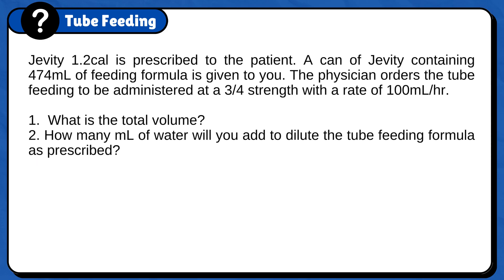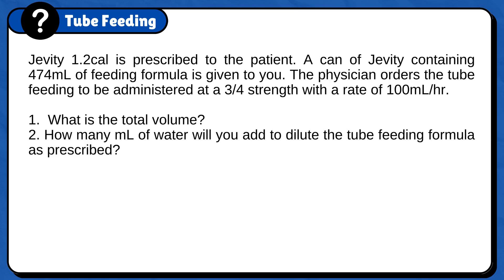Javity 1.2 cal is prescribed to the patient. A can of Javity containing 474 ml of feeding formula is given to you. The physician orders the tube feeding to be administered at ¾ strength with a rate of 100 ml per hour. Question 1: What is the total volume? Question 2: How many ml of water will you add to dilute the tube feeding formula as prescribed?